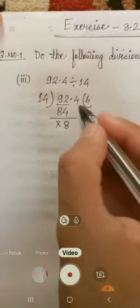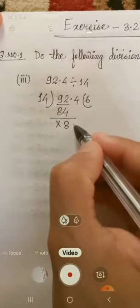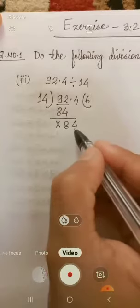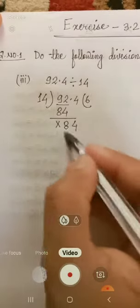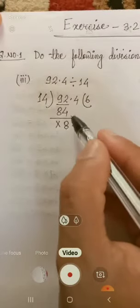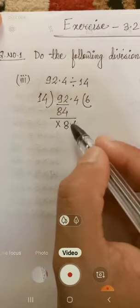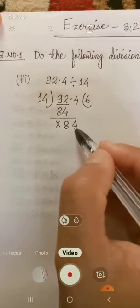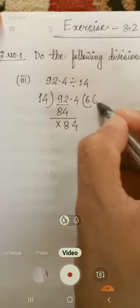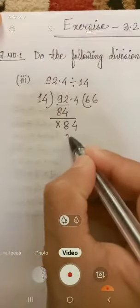If we subtract 8 from 8, there will be 0, nothing. Now bring down this 4. Again get here 84 as a remainder. So we found here 84 after bringing down this 4. Again, 6 times 14 is 84.